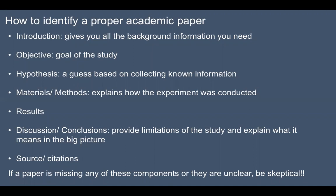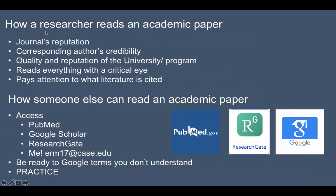In the discussion or conclusion section, authors can provide limitations of the study and explain what the results mean in the big picture. There should always be sources and citations. If a paper is missing any of these components or they're unclear, you should be very skeptical of its legitimacy as a peer-reviewed published paper. As a researcher constantly reading papers, I look at how good the journal is, and the corresponding author's credibility — the last author or the first author on the paper.